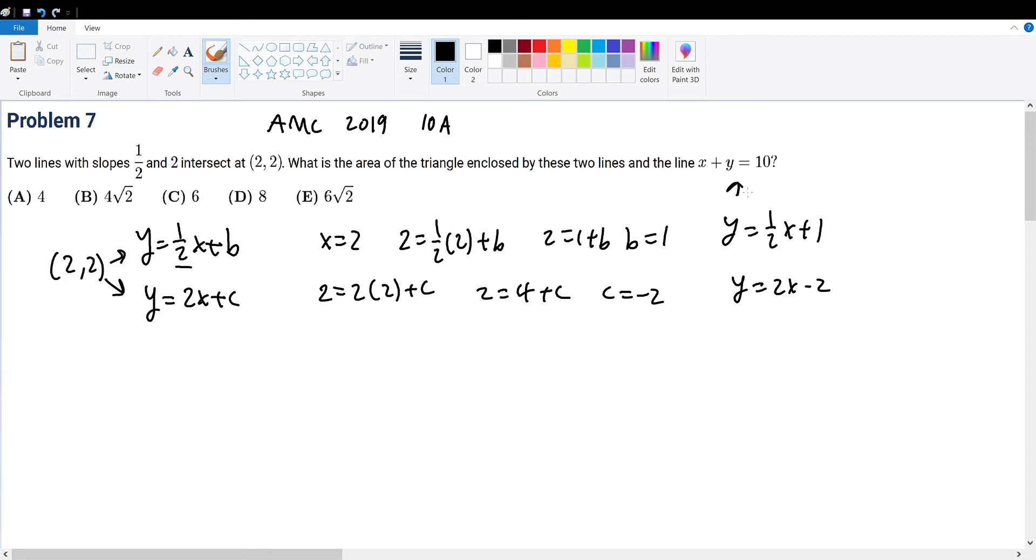And combine this with this equation, which we're going to write in slope-intercept form to be y equals negative x plus 10.